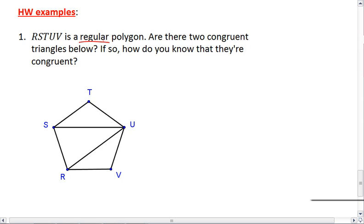So looking at the fact that RSTUV is a regular polygon, are there two congruent triangles below? If so, how do you know that they are congruent?